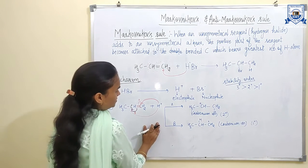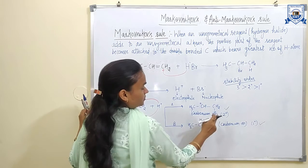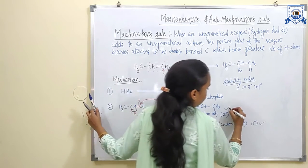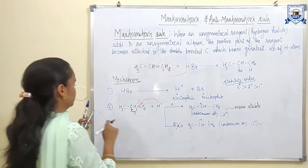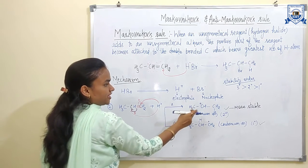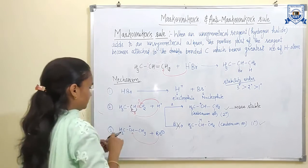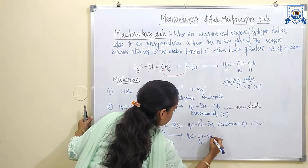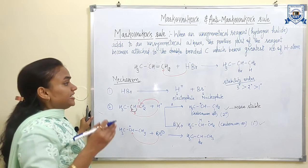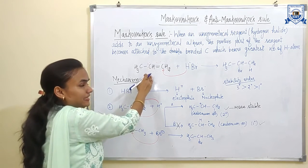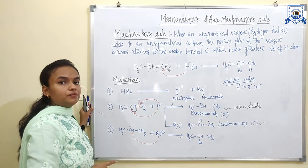So here are two possibilities in the second step: a 2° carbocation forms or a 1° carbocation forms. The 2° carbocation is more stable, so it is the intermediate formed in the second step; the 1° intermediate will not form because it is least stable. In the third step, Br⁻ attacks on this intermediate carbocation to give the product as per Markovnikov's rule. The modern definition states that electrophilic addition to an unsymmetrical alkene is favored in the direction in which the more stable carbocation is formed.